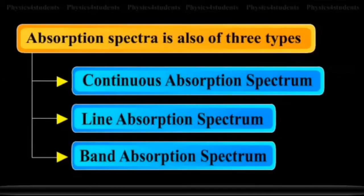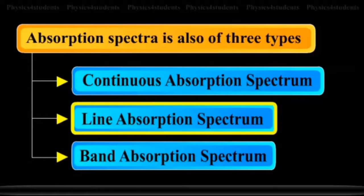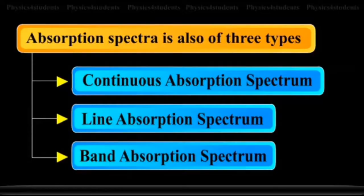Absorption spectra is also of three types: continuous absorption spectrum, line absorption spectrum, and band absorption spectrum.